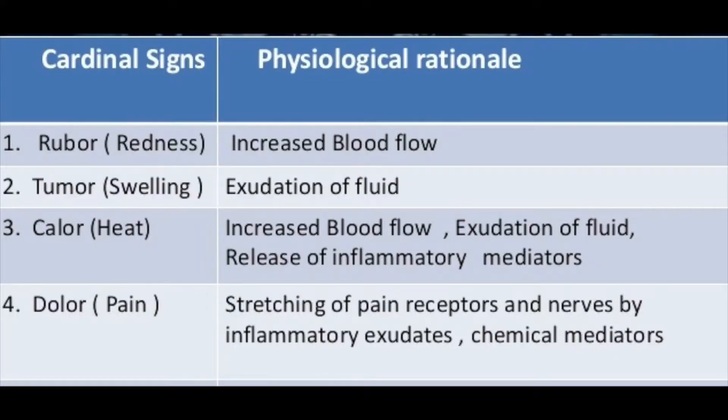Inflammation is clinically seen with classic signs described in Latin as rubor, calor, dolor, and tumor — in English: redness, warmth, pain, and swelling. For example, when you sprain an ankle it swells up and becomes painful with movement. If you contract cellulitis — an inflammation of the skin generally caused by streptococcus or staphylococcus bacteria — you'll note that the skin area becomes painful, red, warm, and swollen. That is acute inflammation in action.